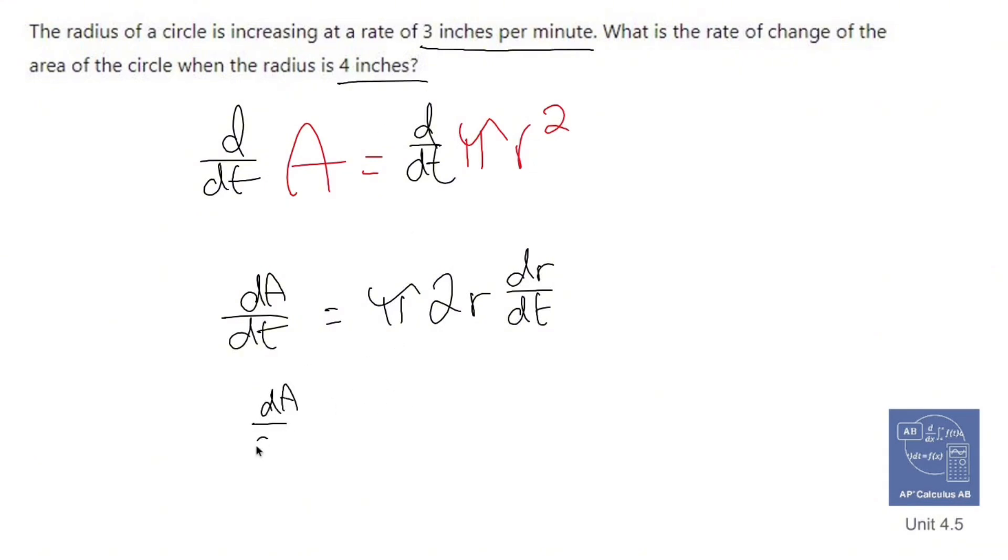So dA dt is going to equal pi times 2, the radius is 4, and dr dt is 3. So that simplifies out to 2 times 4, which is 8 times 3, which is 24, 24 pi inches per minute. And that's how you do it, related rates.